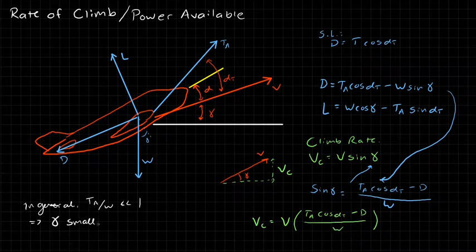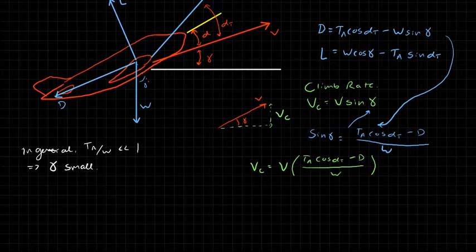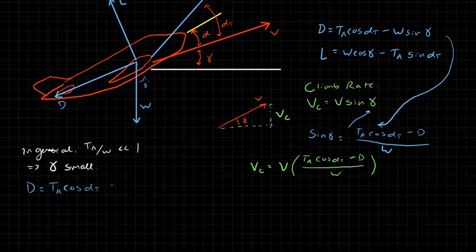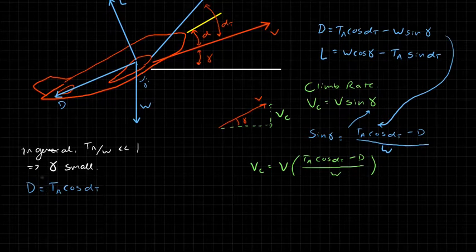So what this means is that for our drag, instead of having gamma in there, if gamma is small, we can assume the drag is essentially the steady level flight drag. This comes from plugging in small gamma in the drag equation, giving drag equals thrust·cos(α_t), which is our steady level flight drag. This approximation is conservative — we are assuming more drag than there really is, which is how we want it. Notice that with a climb angle, there is actually less drag.